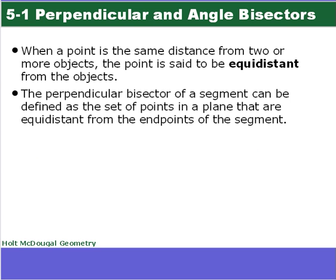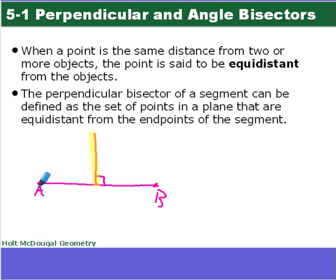We have a few definitions we need to talk about before we get to the theorems. The first one says when a point is the same distance from two or more objects, the point is said to be equidistant from the objects — it's just equal distance from those two objects. A perpendicular bisector of a segment can be defined as a set of points in a plane that are equidistant from the endpoints. So if I were to draw a line segment and the perpendicular bisector, any point on this line is going to be the same distance from A as it is from B.